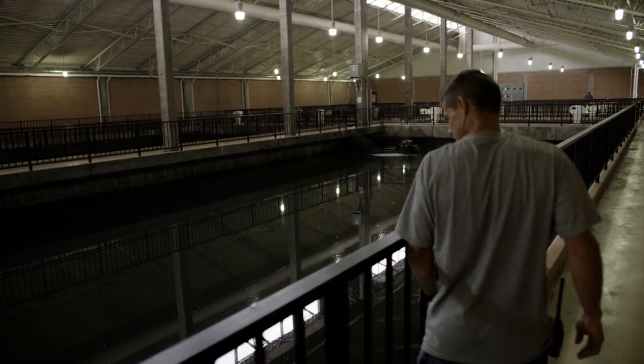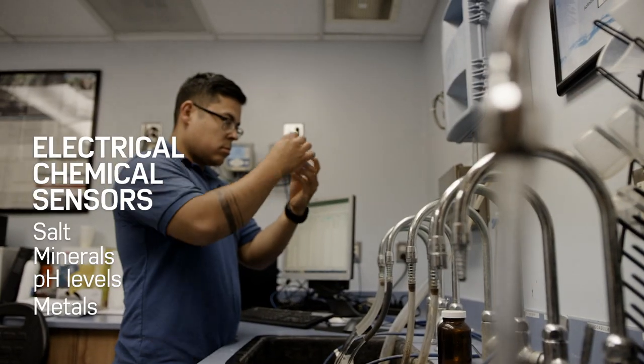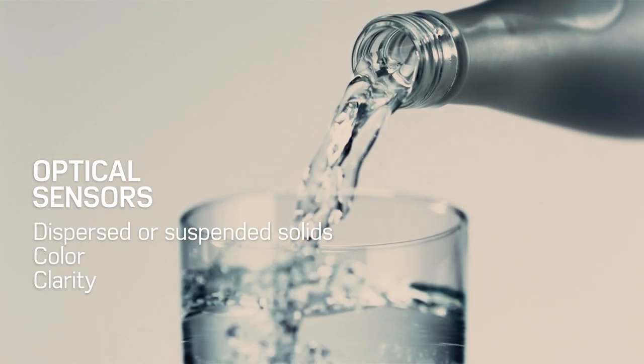For water quality monitoring, there are typically two types of sensors. Electromechanical ones that are used to test water for salts, minerals, and pH, and even some low-level contaminants like metals. Optical sensors are used to detect dispersed or suspended solids that might be present in the water, as well as color and clarity of water.